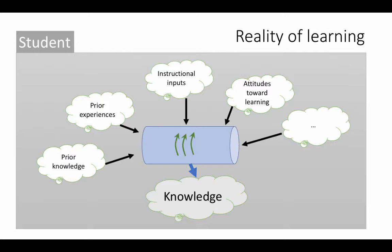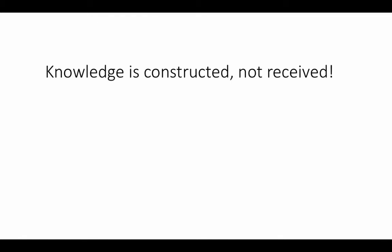Here are some general statements about the process of education and how learning occurs. First, knowledge is constructed, not received — the student is constructing the knowledge, not receiving it from the instructor. This is a shift from the traditional conception of learning to what is now understood. It is the student who plays a much bigger role in the process. The instructor actually has a much smaller role to play — although very important, still a smaller role.